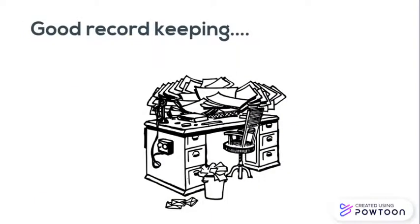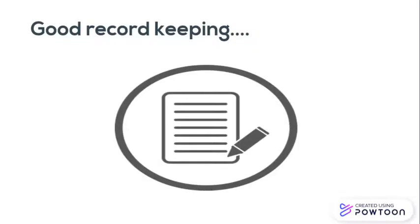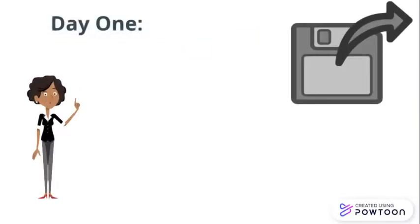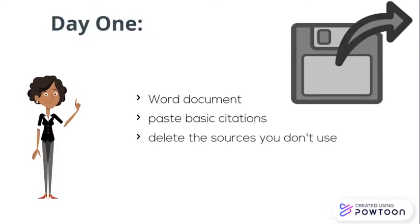Now that you know what you do and don't need to cite, the next thing to think about is your record keeping. Make sure you keep track of your sources right from day one, so you don't forget to cite any of them. An easy way to manage your sources is to start a Word document and paste in the basic citation information for every source you're even thinking about using. If you don't wind up using something on your list, you can always delete it later.